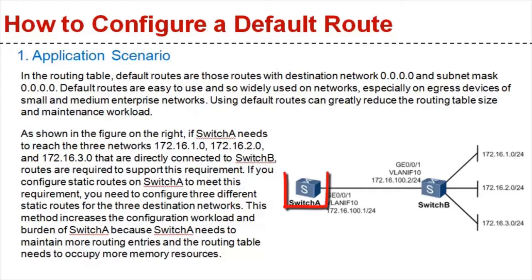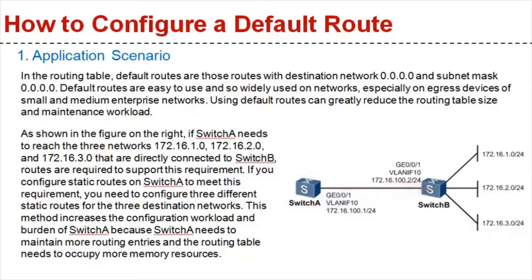As shown in the figure on the right, if switch A needs to reach the following three networks — 172.16.1.0, 172.16.2.0, and 172.16.3.0 — that are directly connected to switch B, routes are required to support this requirement. If you configure static routes on switch A to meet this requirement, you need to configure three different static routes for three destination networks. This increases the configuration workload and burden on switch A, because switch A needs to maintain more routing entries and the routing table needs to occupy more memory resources.